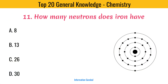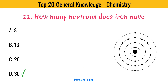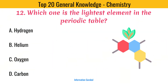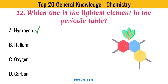How many neutrons does iron have? 30. Which one is the lightest element in the periodic table? Hydrogen.